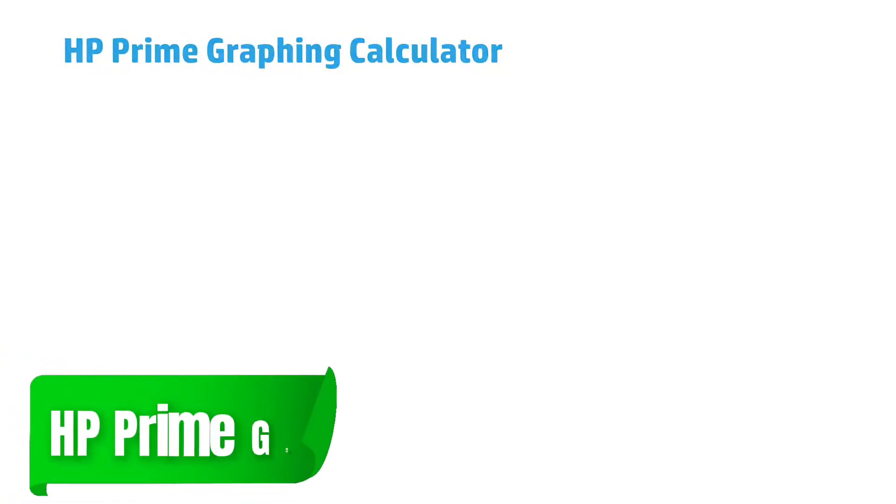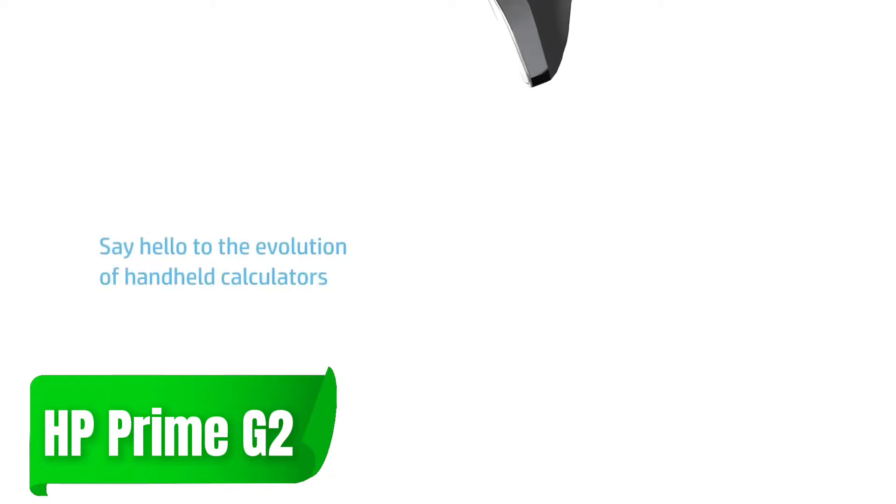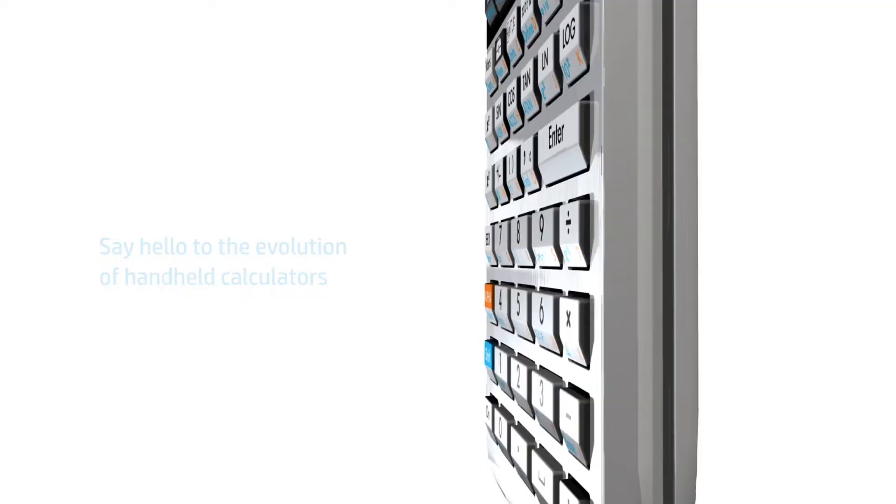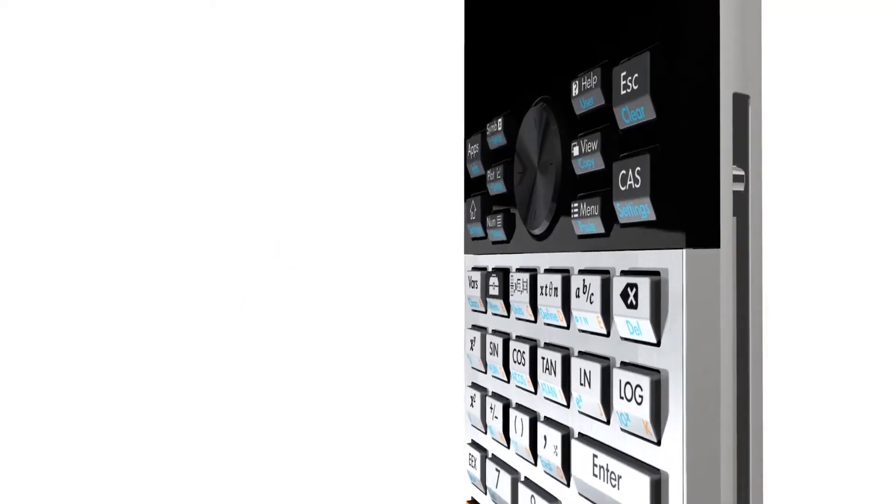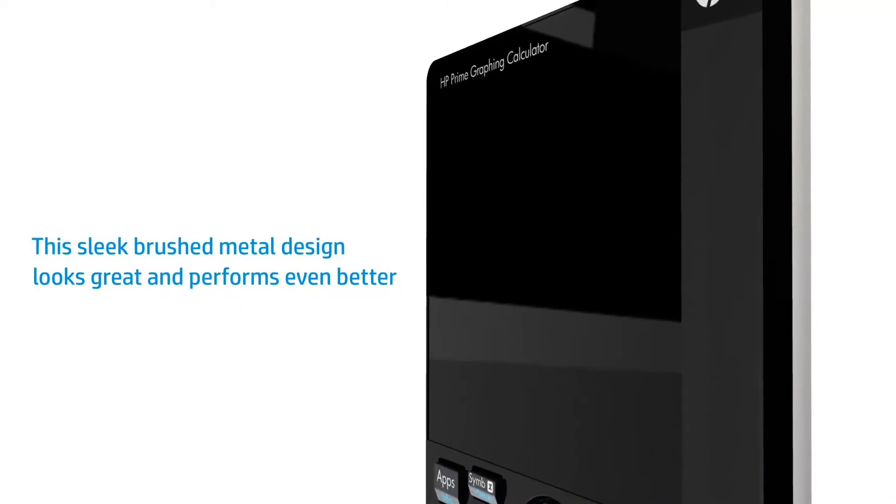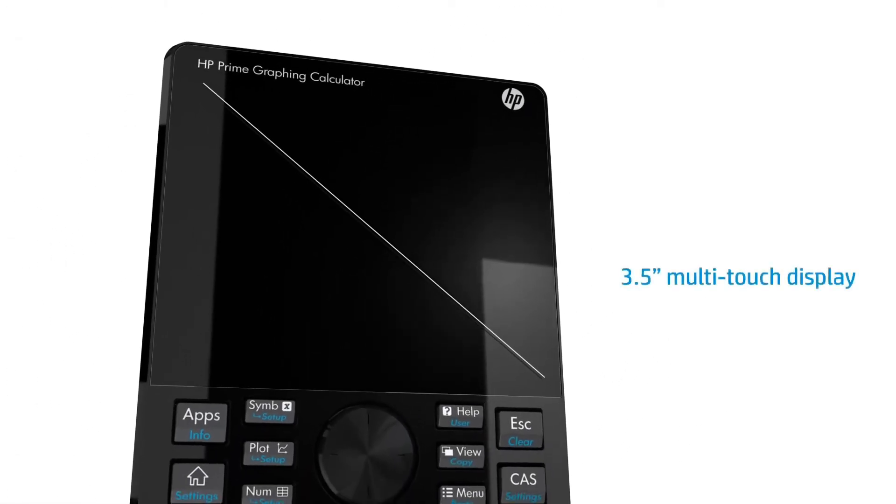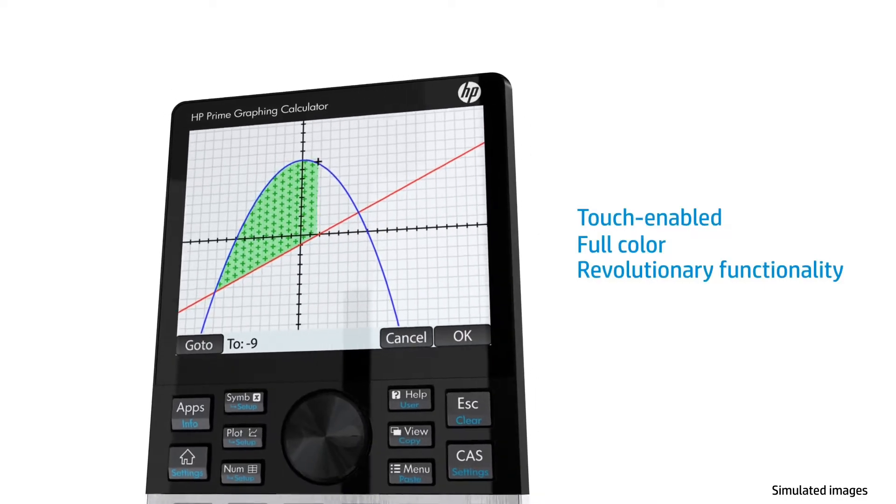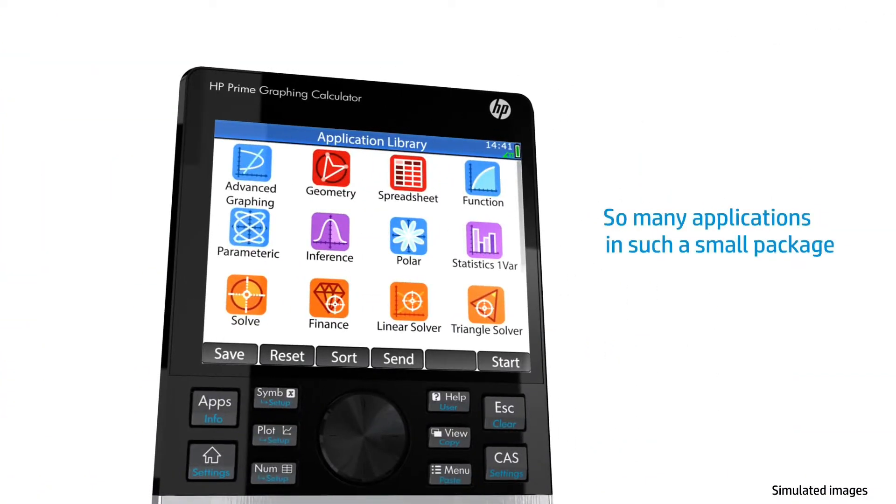Starting with number one, the HP Prime G2. This calculator offers a high-resolution touchscreen that makes it stand out immediately. Known for its combination of symbolic and numeric calculations, it ensures that you can seamlessly switch between solving algebraic expressions and getting exact numeric results. This is a lifesaver when you're working through advanced engineering problems that need precision on both ends. Whether you're a student or a professional, this device will help you work faster and more efficiently.